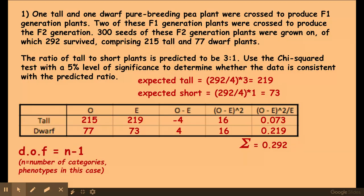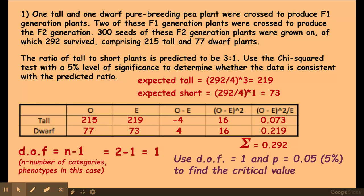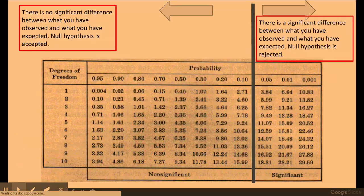I then work out my degrees of freedom which is 1, and I would then look at that in a probability table up to the 5% critical value level.